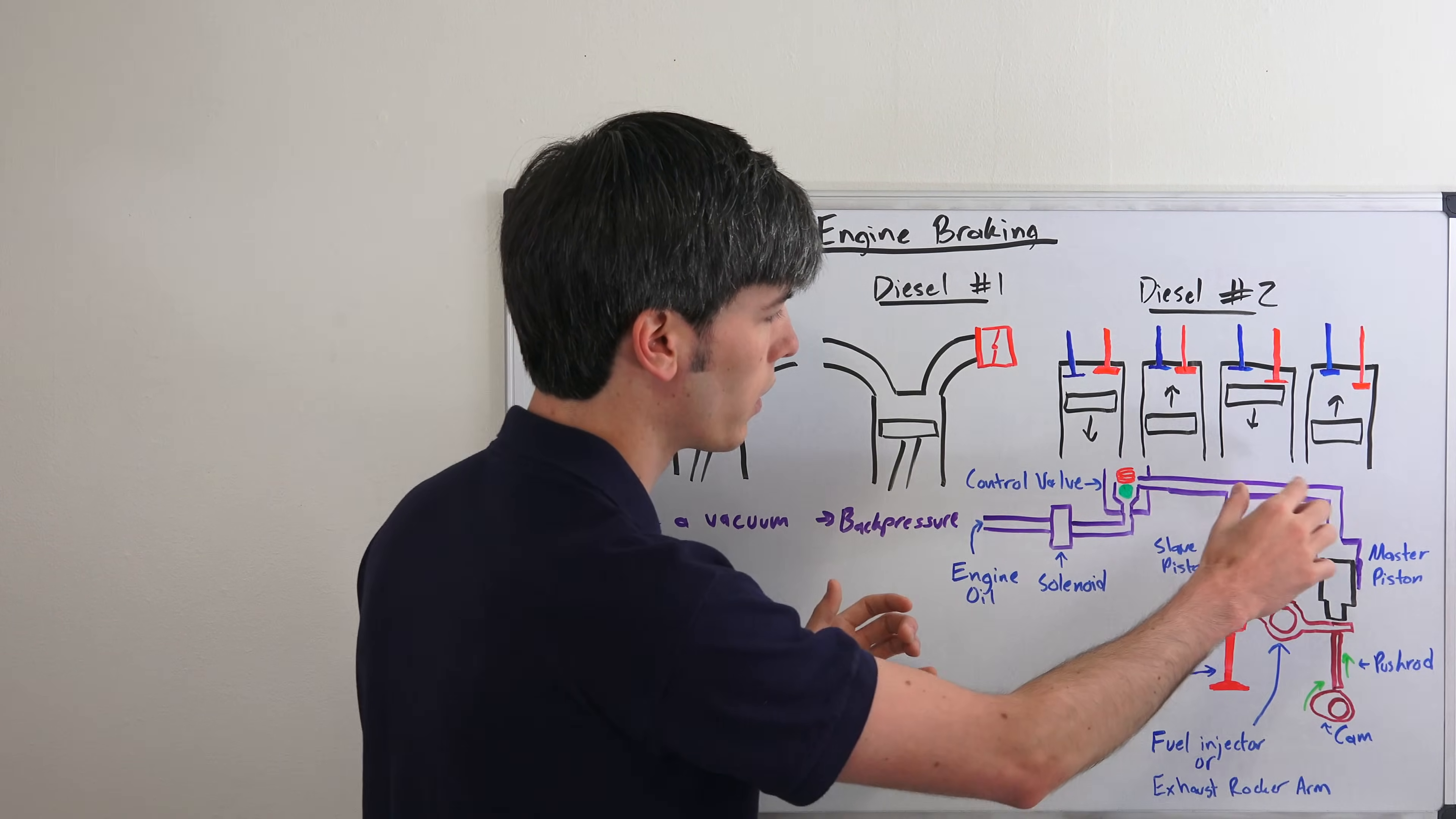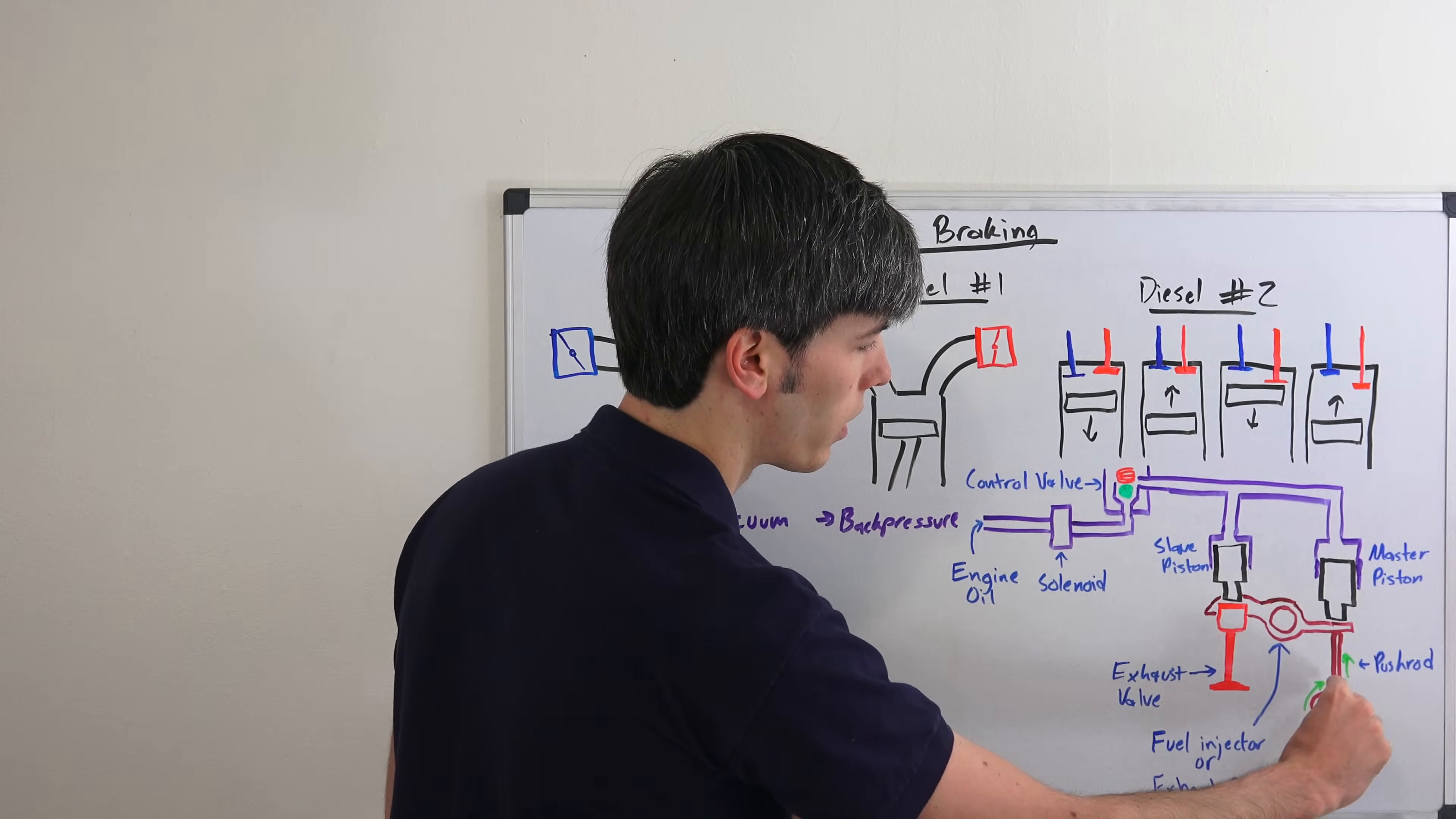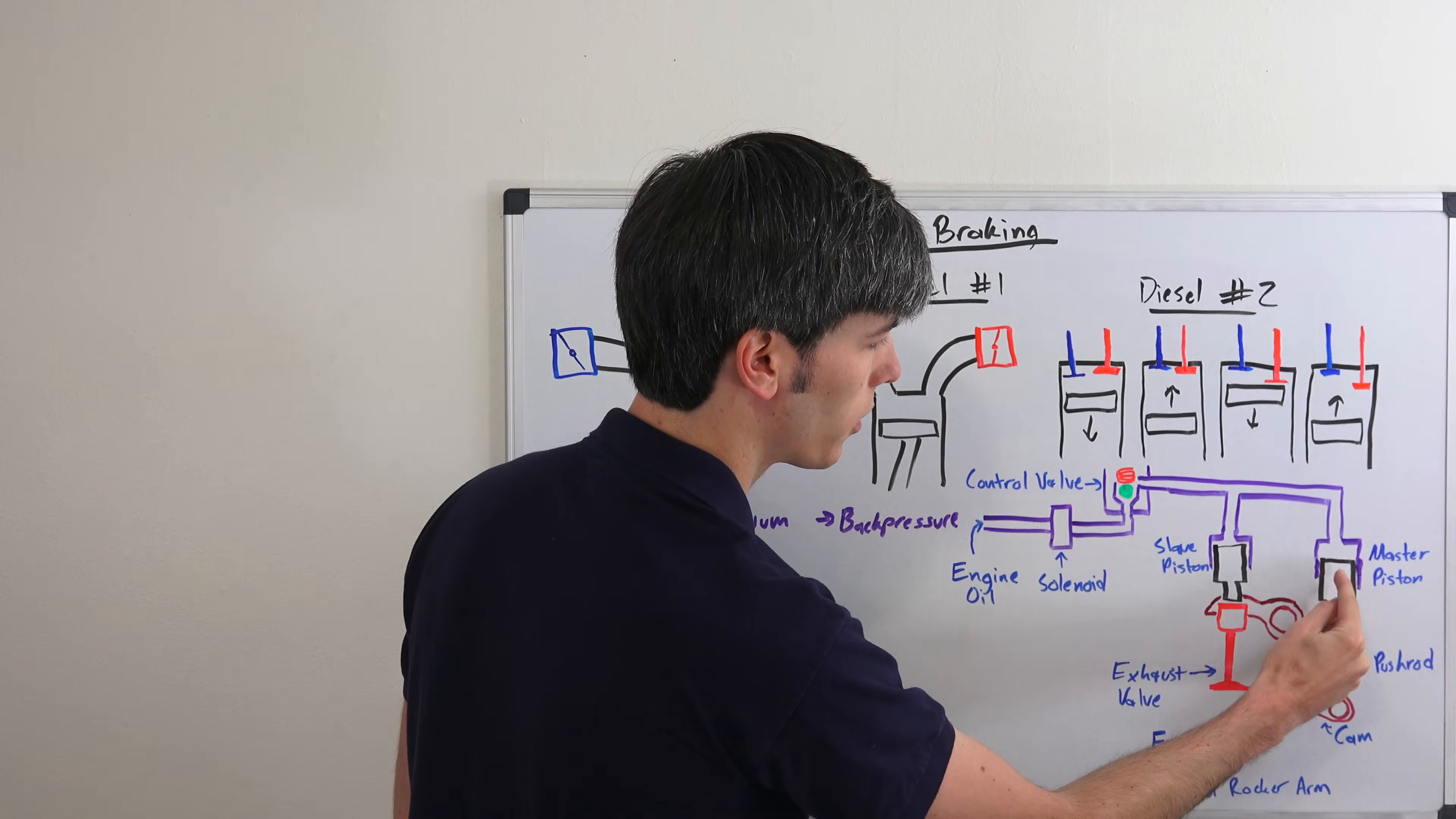So how this happens is your oil flow comes in it pushes down that master piston. Right before this comes up to top dead center your cam here is going to want to inject fuel. And so it's going to rotate and it's going to rotate this rocker arm. Now you can see that rocker arm is going to press up against this master piston.